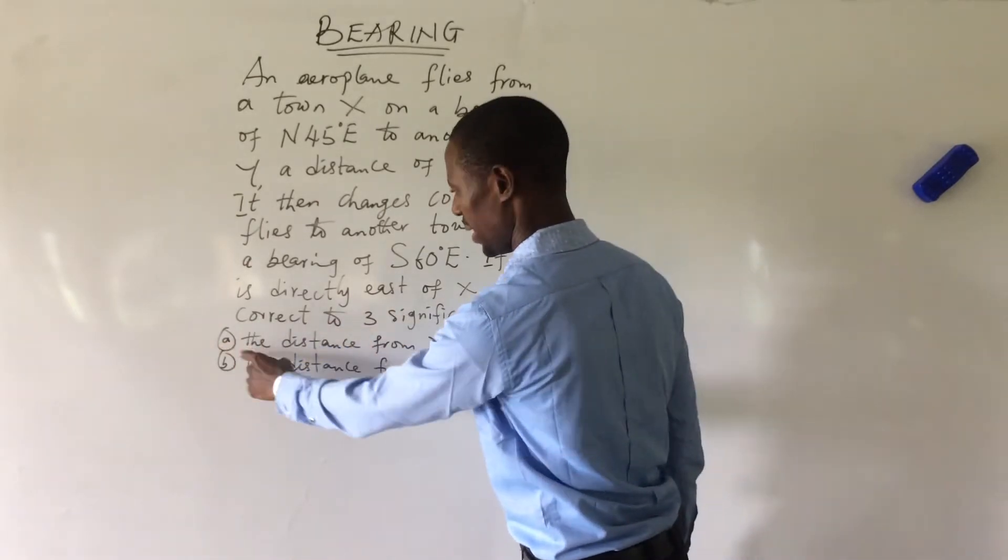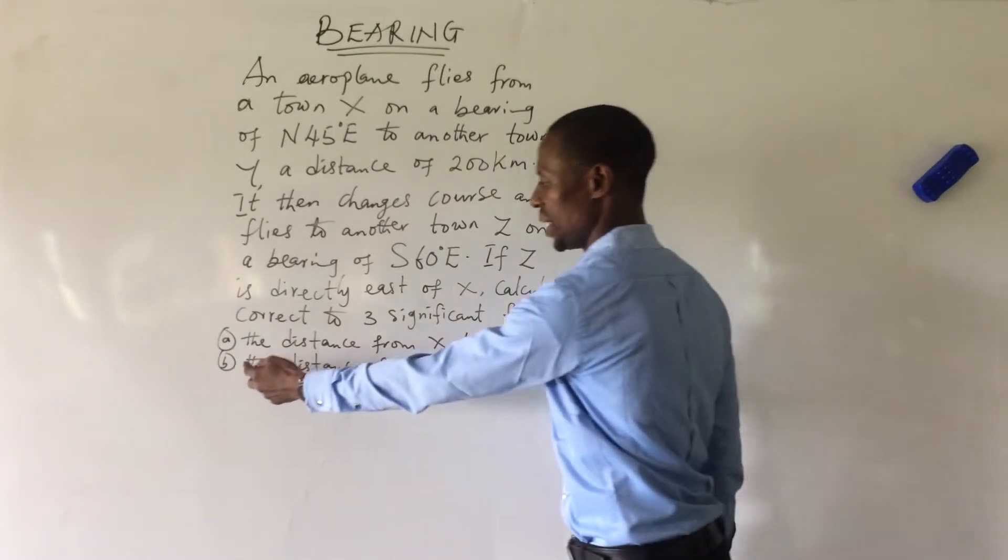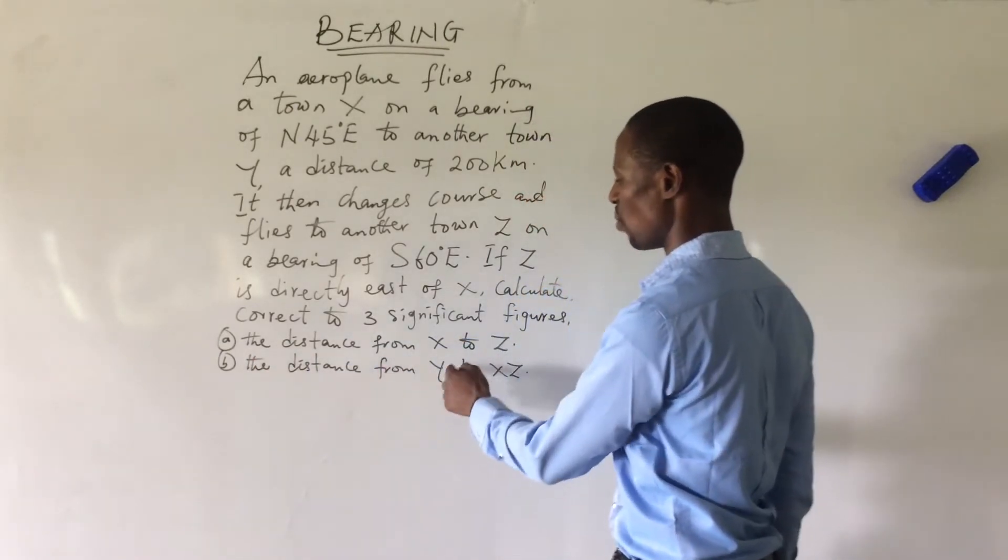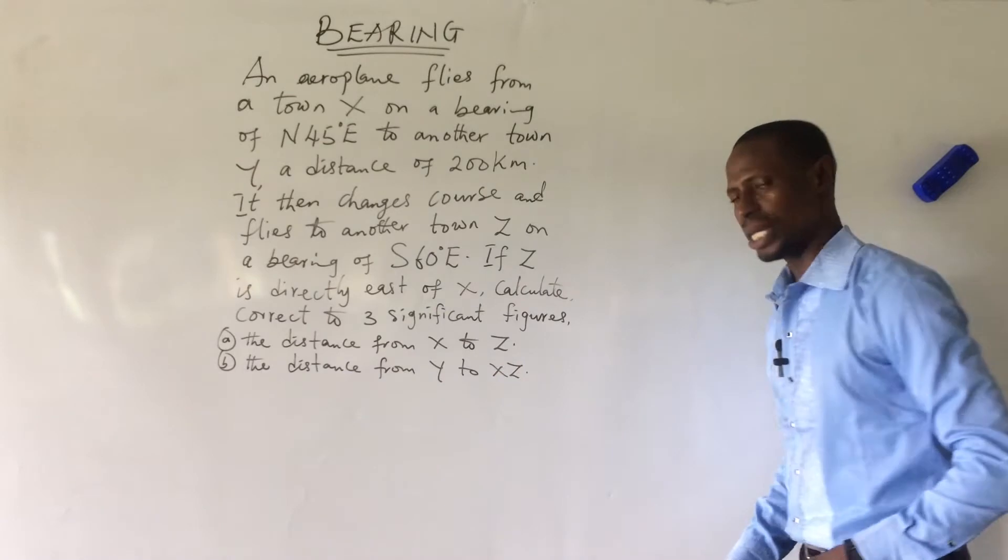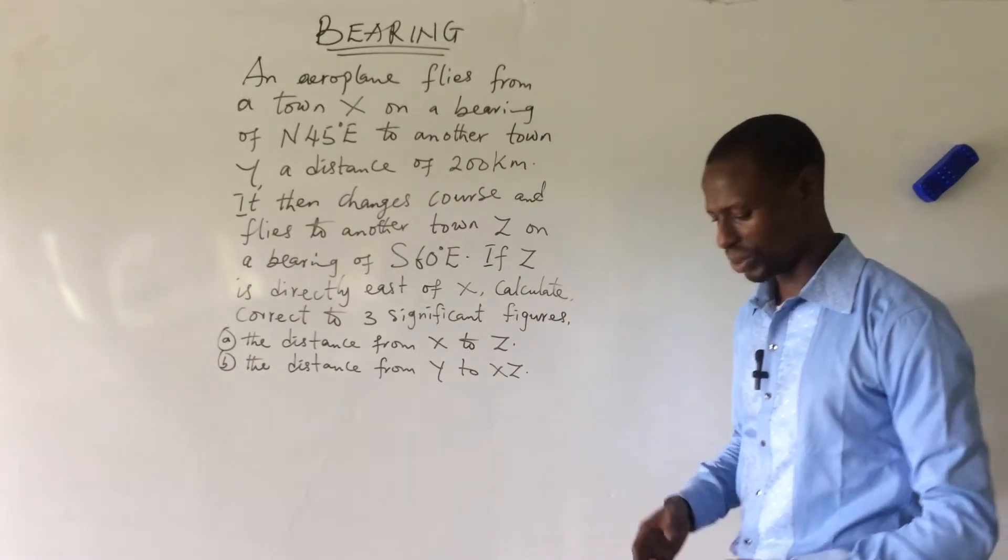If Z is directly east of X, calculate correct to three significant figures: A. The distance from X to Z. B. The distance from Y to Z. How do we tackle this? We take the solution.